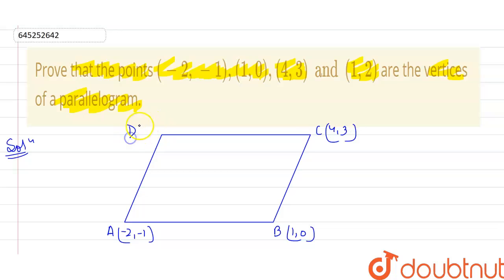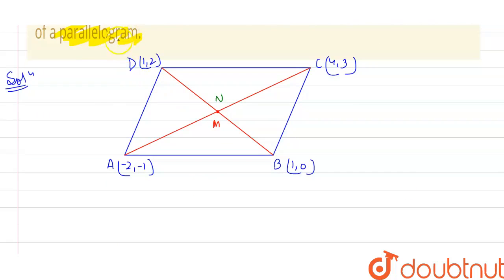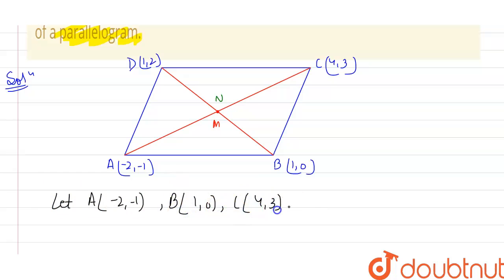The last point is D, and the coordinates are (1, 2). Now if I draw the diagonals of this parallelogram — the first diagonal is BD and the next one is AC. Let me re-state: A is (-2, -1), B is (1, 0), C is (4, 3), and D is (1, 2). These are the vertices of the parallelogram.